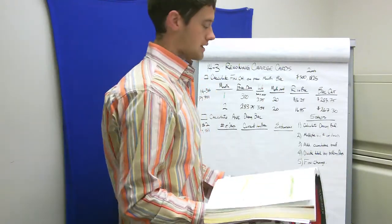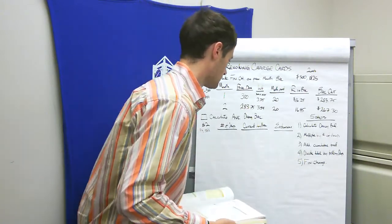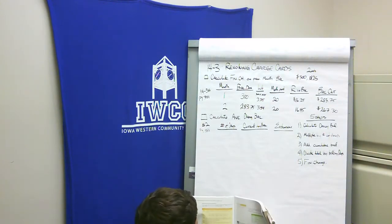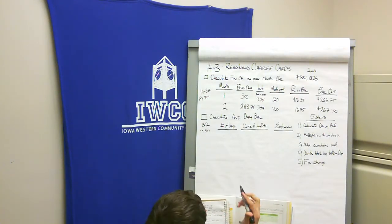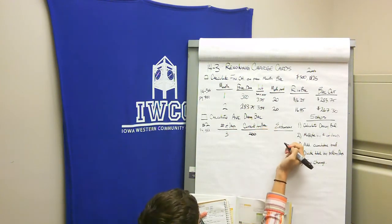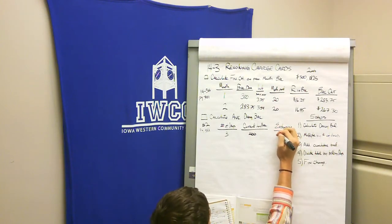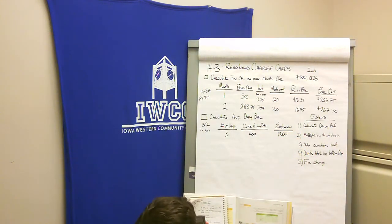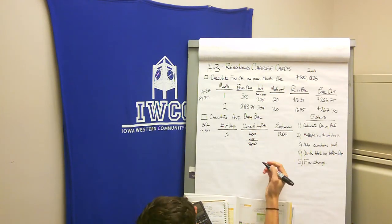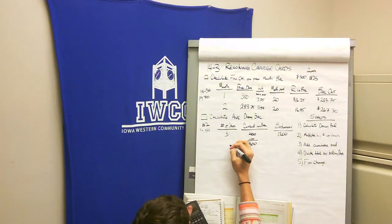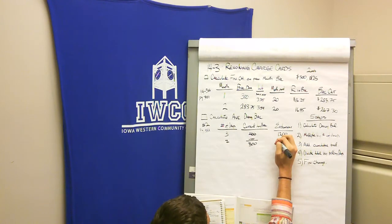It says on 8-21, you had the billing date of $400. We didn't do anything until the 24th, which is three days later. 24 minus 21 is three. For three days we had a balance of $400. If I multiply that together I get $1,200. Then it says on the 24th I made a payment of $100. So my balance is now $300, and it stays that way until the 31st. 31 minus 24 is 7. So 7 times $300 is $2,100.